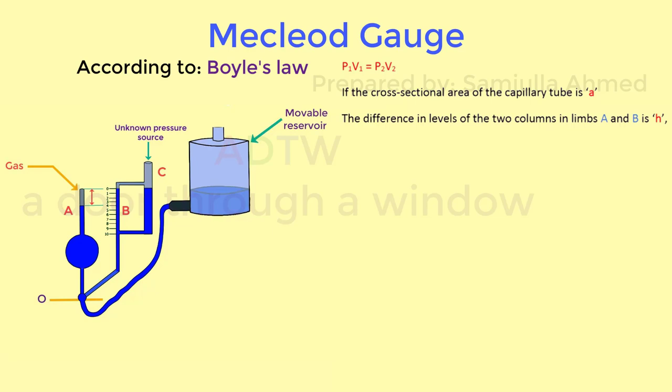If the cross sectional area of the capillary tube is A, and the difference in the levels of the two columns in limbs A and B is H, then V2 will be equal to A into H. A is area and H is the height, where H is the difference between the pressure P1 and P2. That is H is equal to P2 minus P1. This is equation 1.